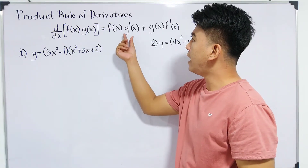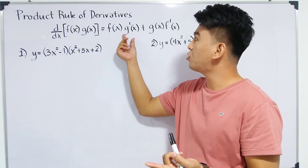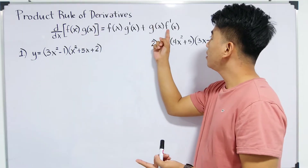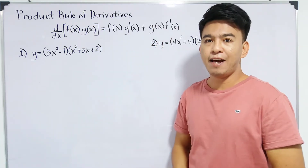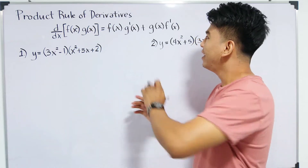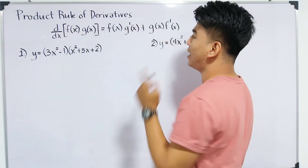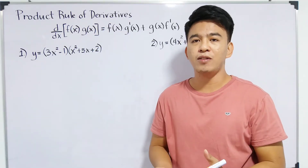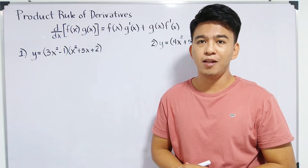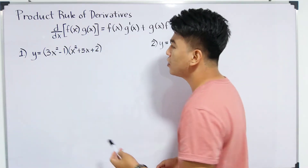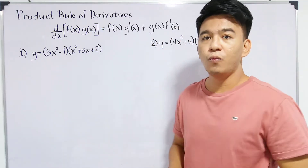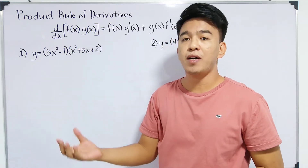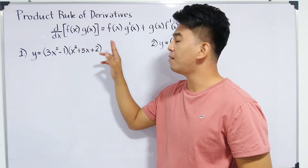The formula is: f of x times the derivative of the second function g prime of x, plus g of x times the derivative of the first function f prime of x. I know that following this formula might be confusing, but upon using our examples here, you will understand how to use the product rule. So, we have here number one: y is equal to 3x squared minus 1, times the quantity of x squared plus 5x plus 2.